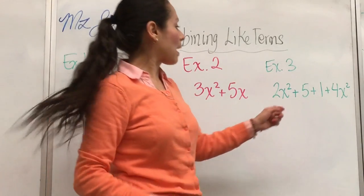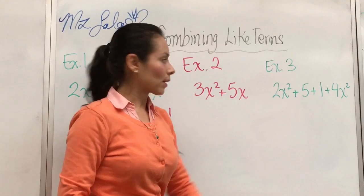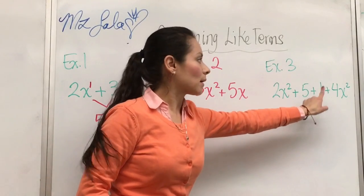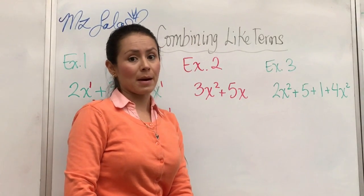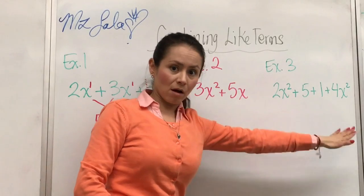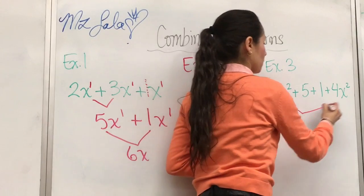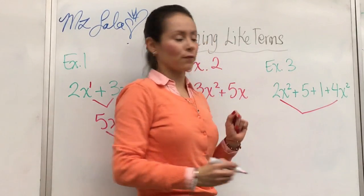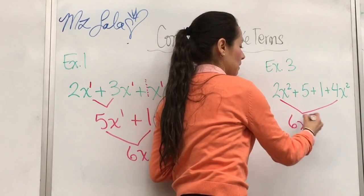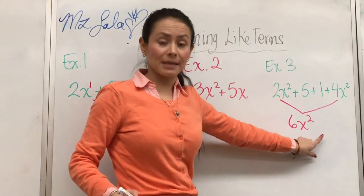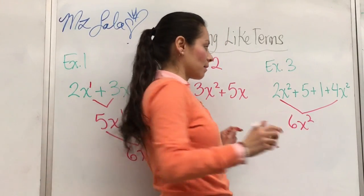Now we look at the next one. We have 2x to the second power plus 5 plus 1 plus 4x to the second power. You cannot combine all of them, but you do have some terms that are alike. So we can combine your 2 and your 4. That would be 6. So x squared stays as x squared. Remember, you do not add the powers.